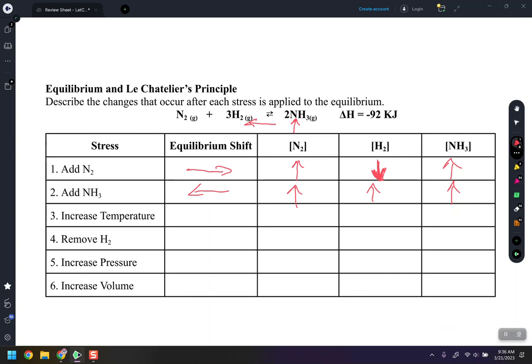Increased temperature. So increased temperature, we have to go over here and we're looking at this delta H value. So delta H is the same thing as Q, but it applies to chemical reactions. We remember from our thermochemistry unit that the negative sign tells us that this is exothermic. So that means this is the same thing as saying plus heat on this side.